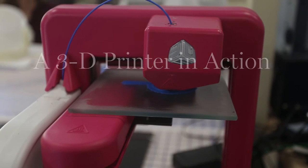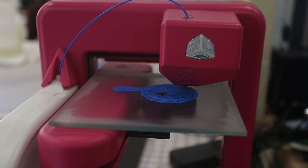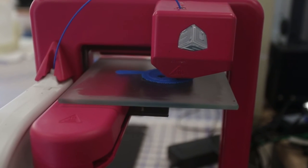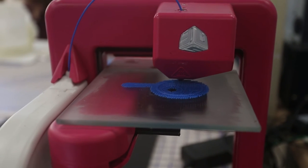What's on there now is what's called a raft. It's kind of like a base for support because when you're printing in 3D, you can't build off of nothing.